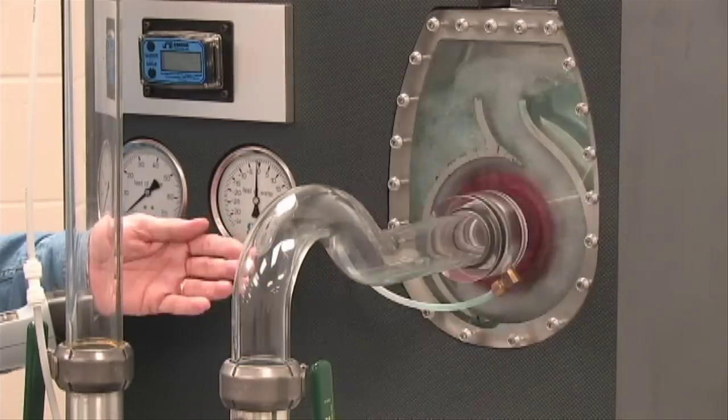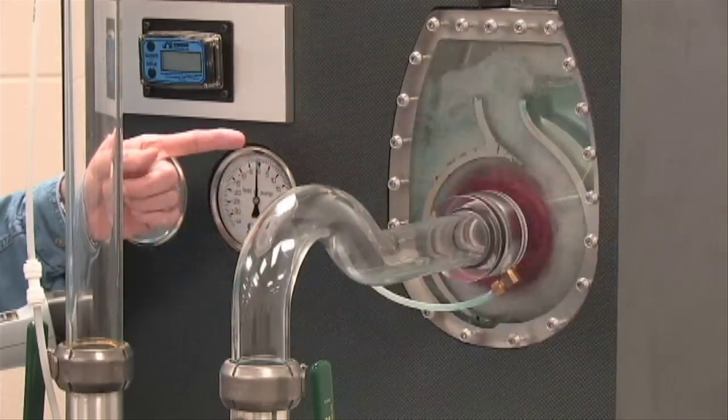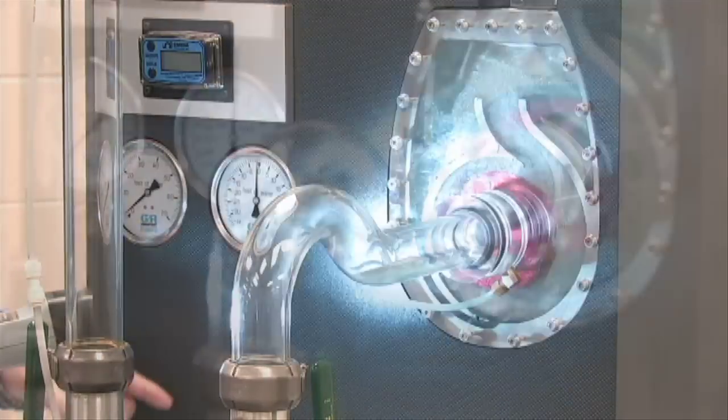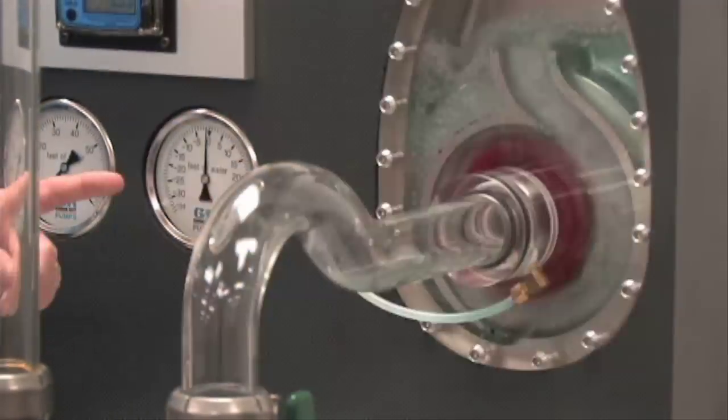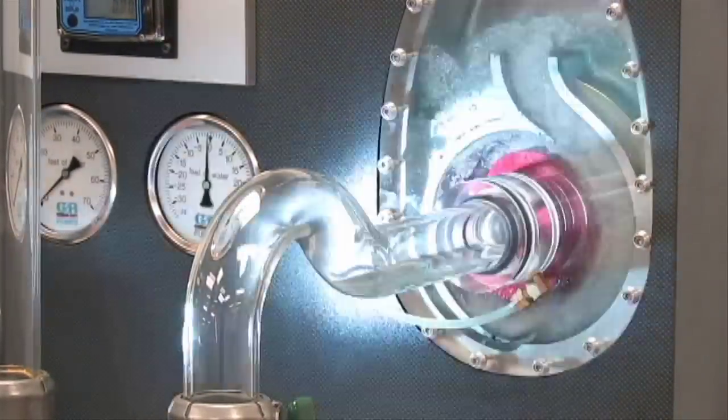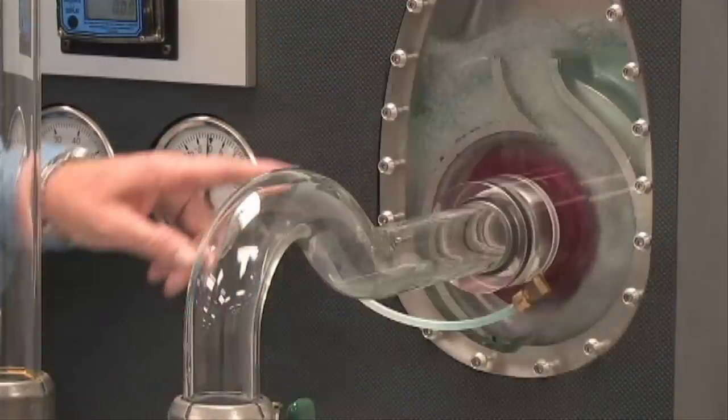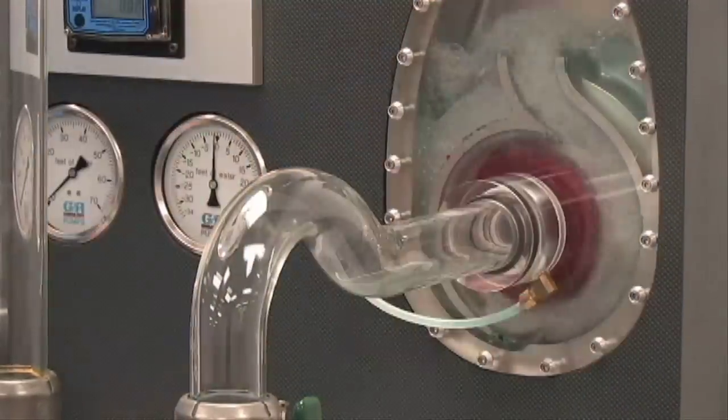After we fill the volute casing with water and we energize the pump, the impeller turns in a counter-clockwise rotation. The initial prime of the pump is slung through the volute scroll or the ever-increasing water channel into a pressure cavity or a discharge chamber inside the volute.